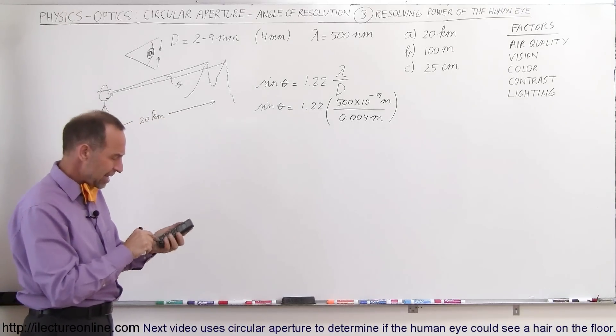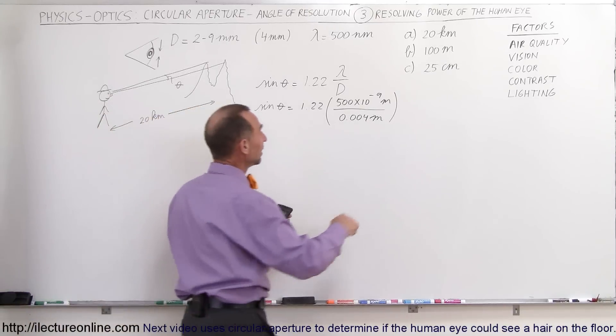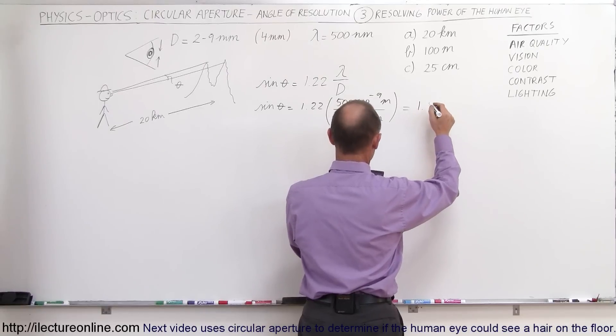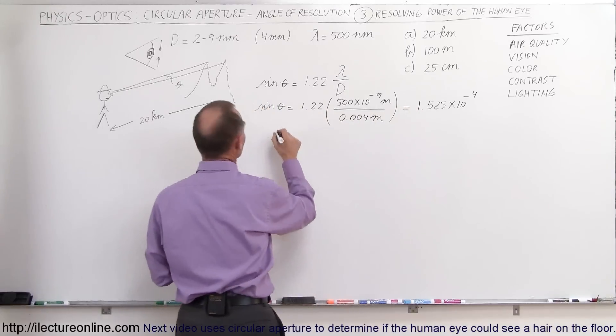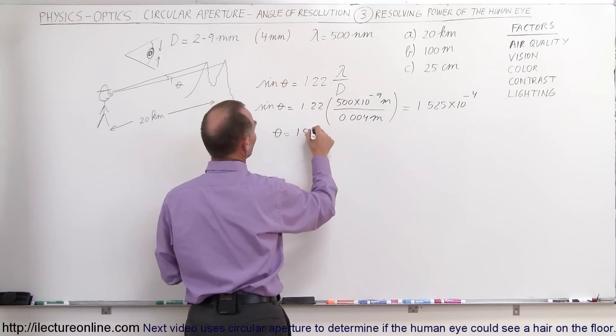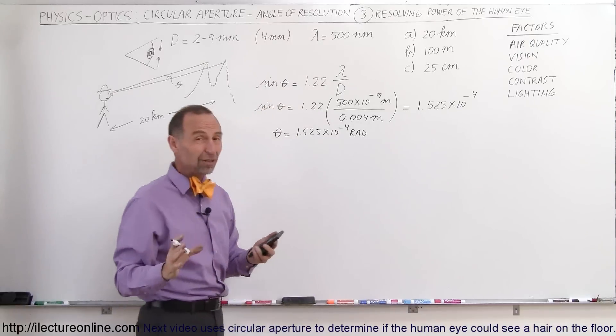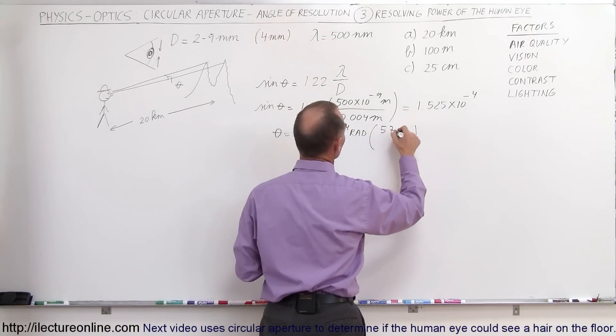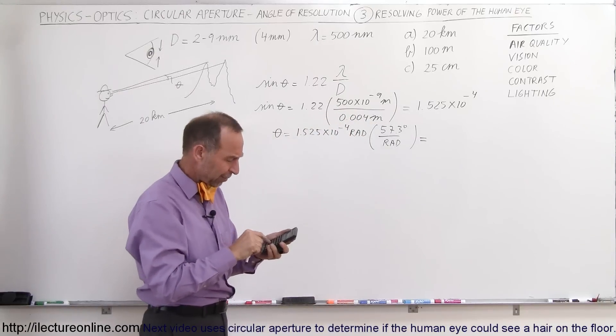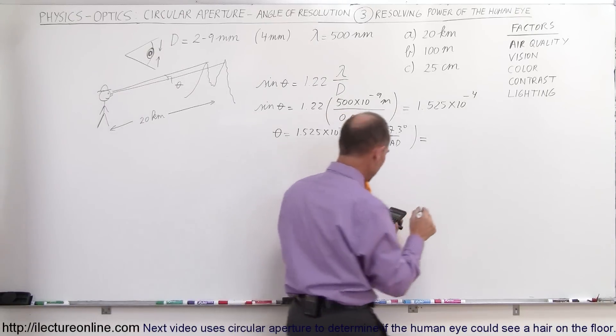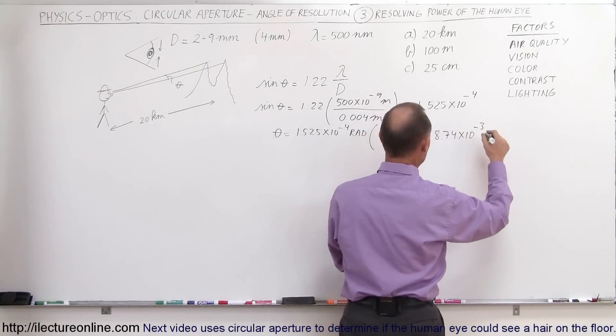Alright, 500 e to the minus 9 divided by 0.004 times 1.22 equals, so the sine of theta is equal to 1.525 times 10 to the minus 4. Okay, that means that theta is equal to 1.525 times 10 to the minus 4 radians. And if we want to convert that to degrees, we have to multiply times the ratio of 57.3 degrees per radian. So we multiply that times 57.3 equals, that gives us 8.74 times 10 to the minus 3. And that would be degrees.